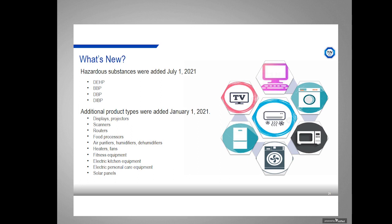Korea is constantly adding new products and hazardous substances to the regulation. In January 2021, they added new substances in plastics and additional products — office equipment, food processors, air purifiers, heaters, and fitness equipment. You can expect that most countries will follow this trend, continuing to add products and eventually controlling all 10 substances as their schemes evolve.